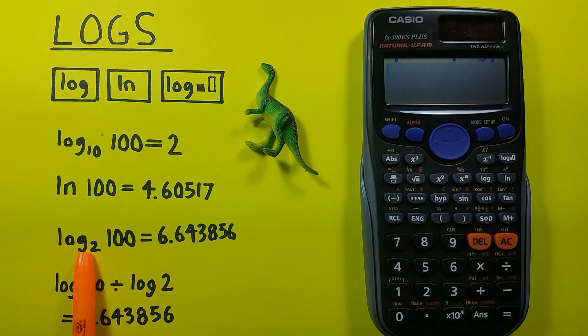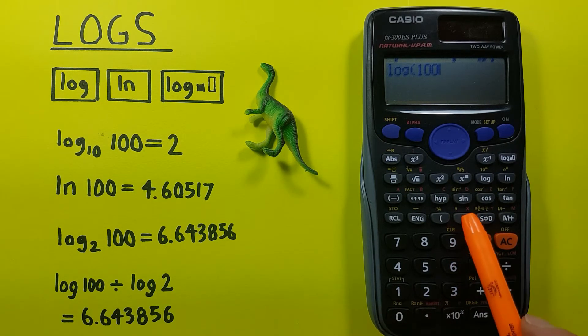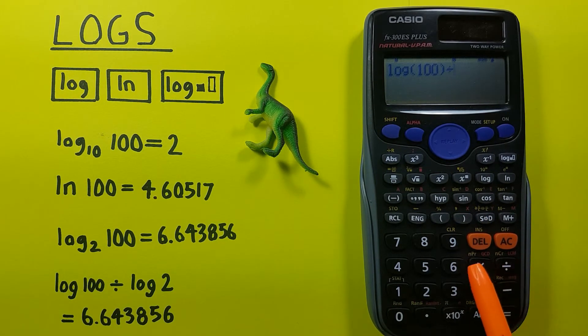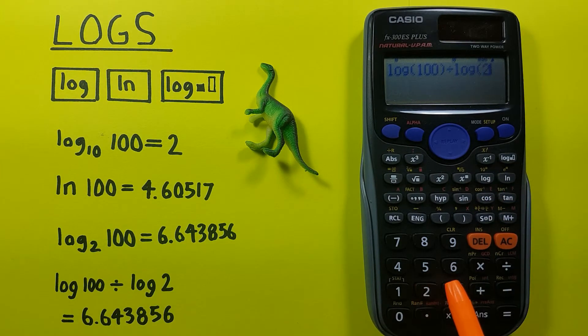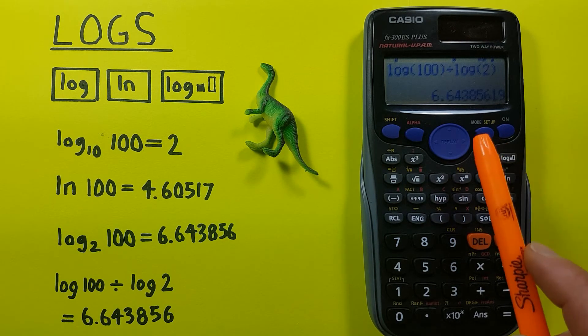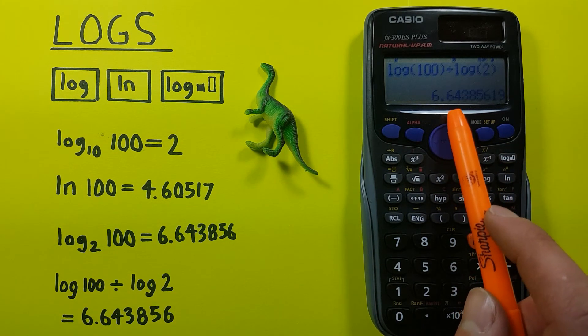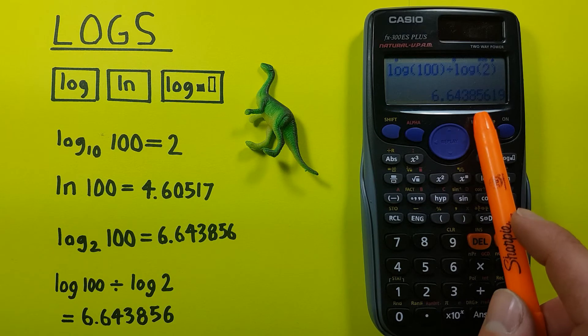So again, if we want to solve log base 2 of 100, we would press log 100, close our bracket, divided by log 2, close our bracket, and press equals. And you can see we get the same result, 6.643856.